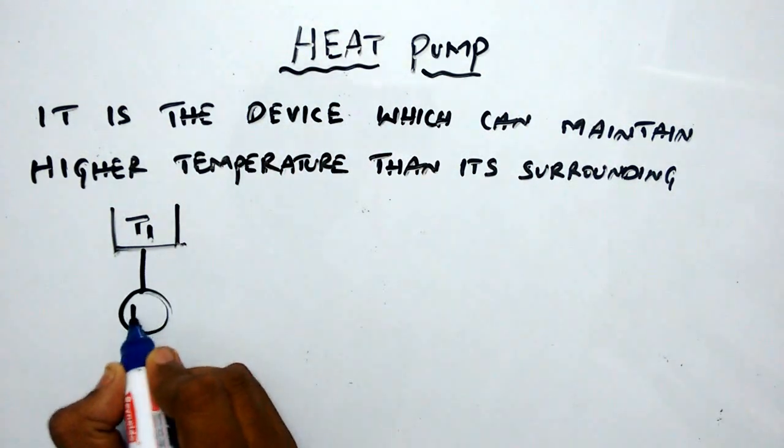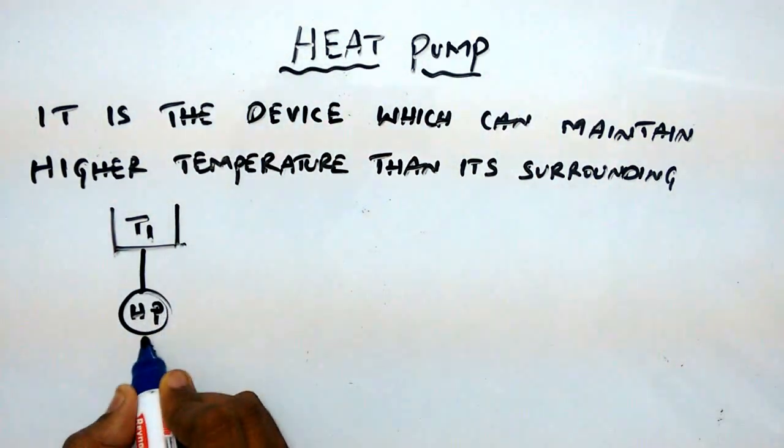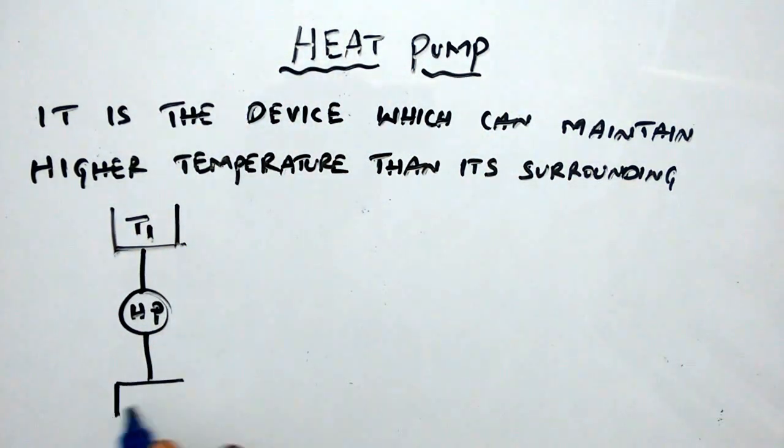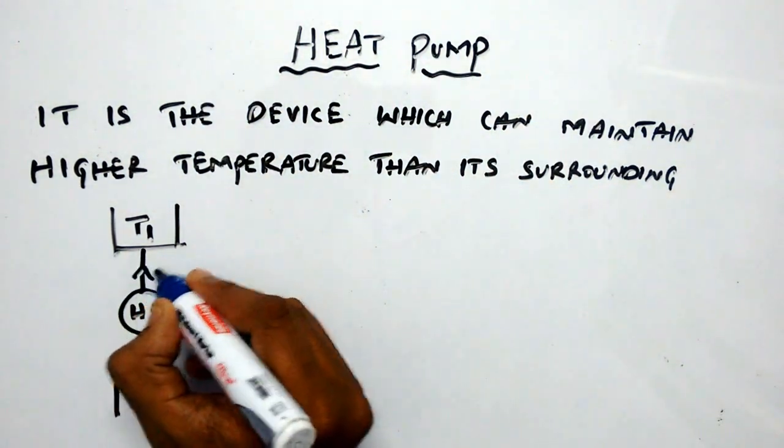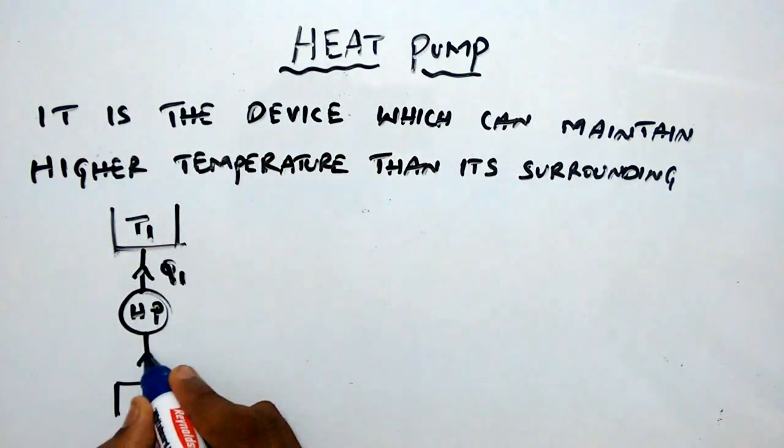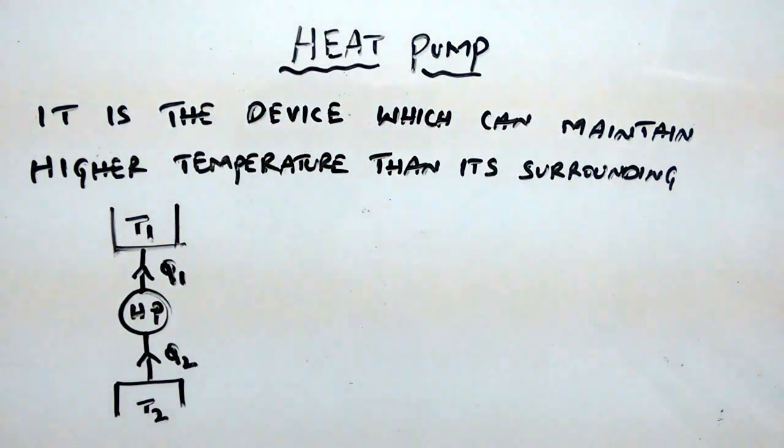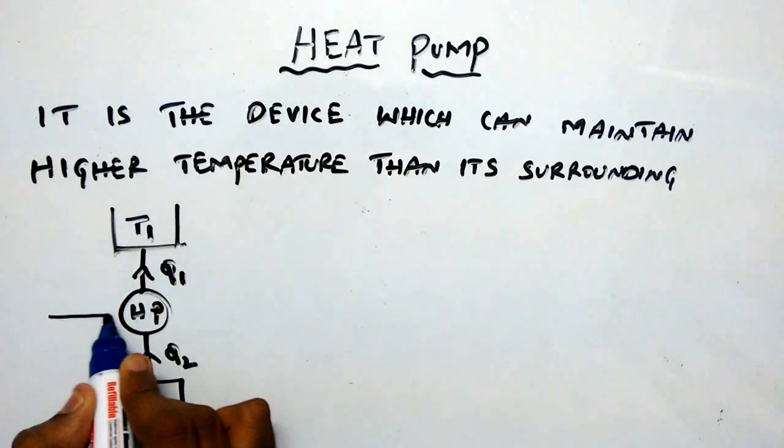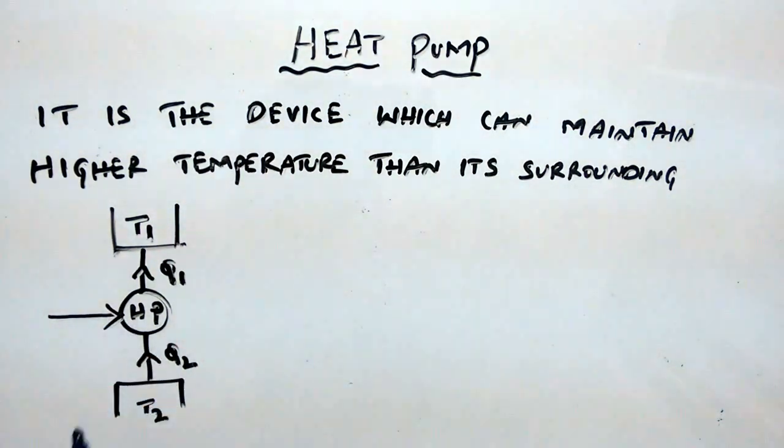The surrounding temperature is T2. Q1 is the heat supplied to the thermodynamic system, and Q2 is the heat rejected. For maintaining higher temperature than its surroundings with the help of a heat pump, you have to supply a certain amount of work input.